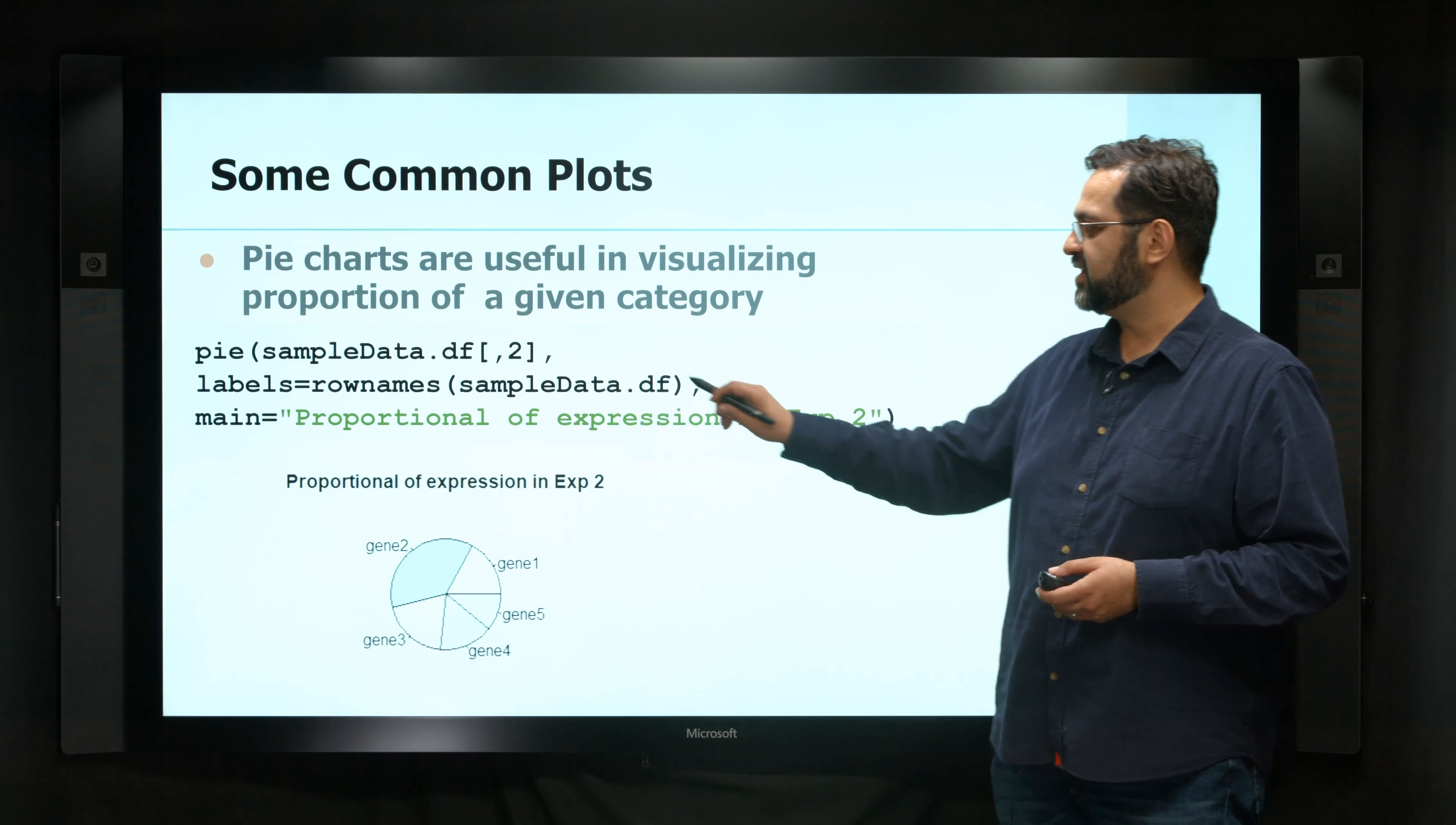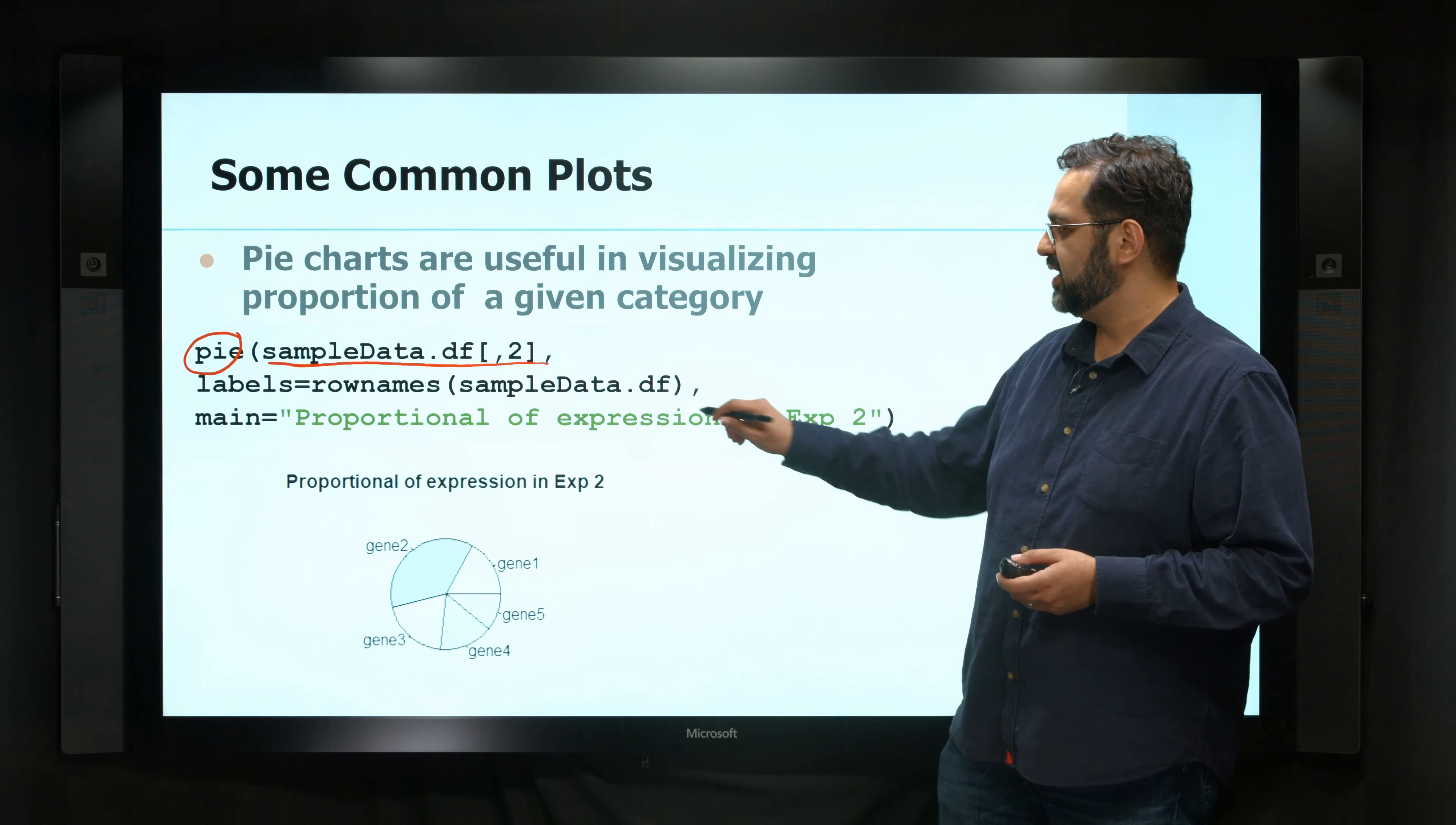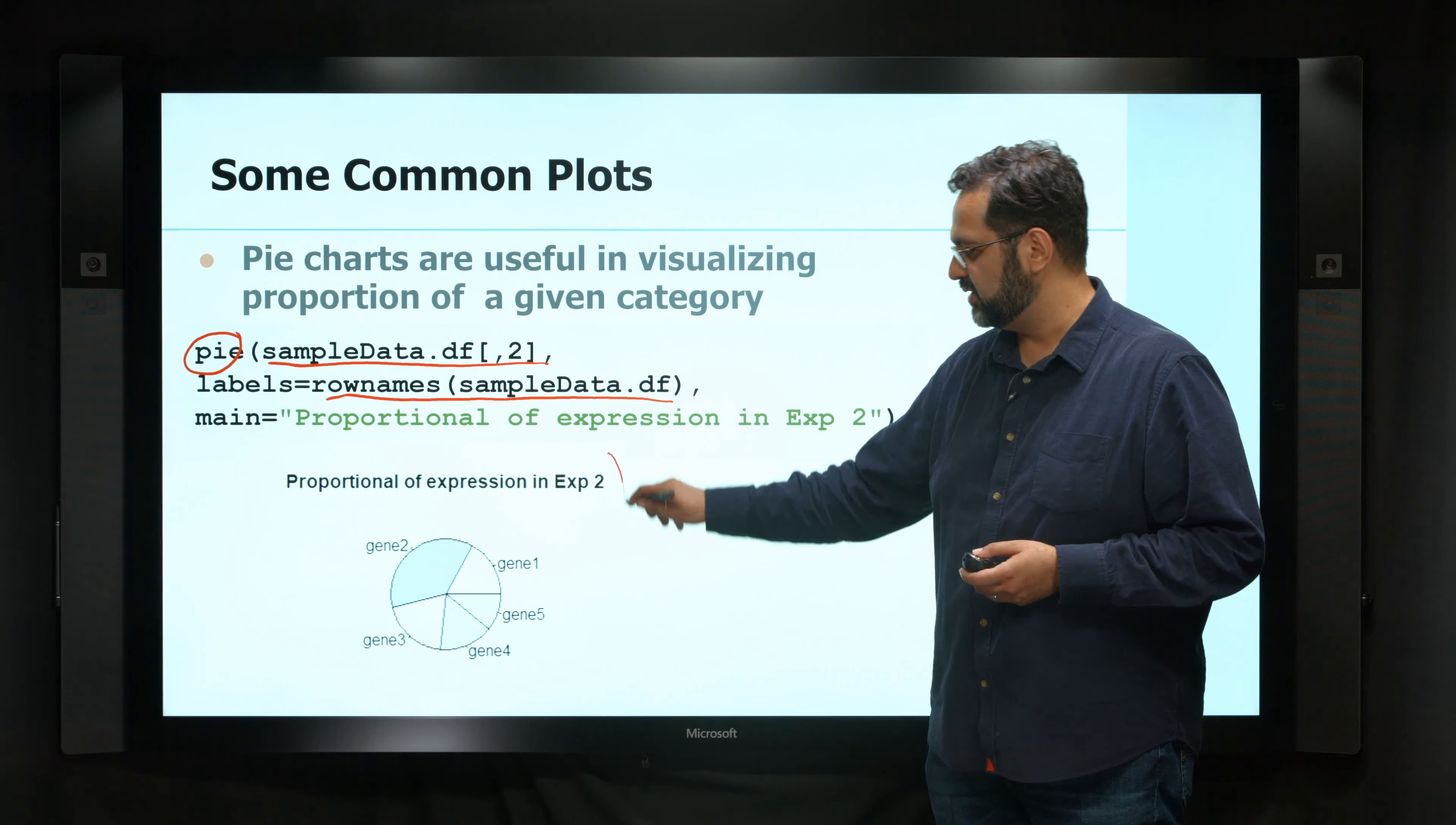So in this case, I just used the pie command, and then I told it I was just looking at the specific example, in this case, the second column. And I said, let the labels be the row names of my data frame. And then this is my main title. And just by this little command, I get a plot like this.